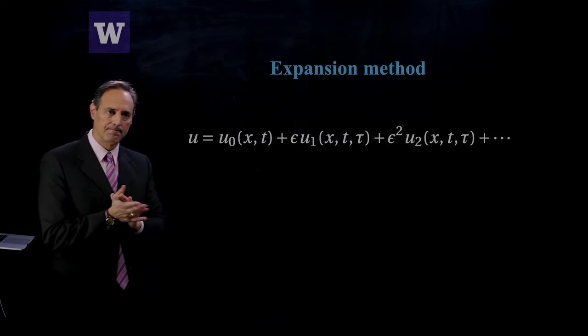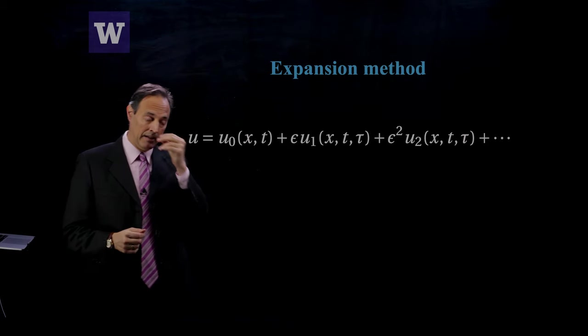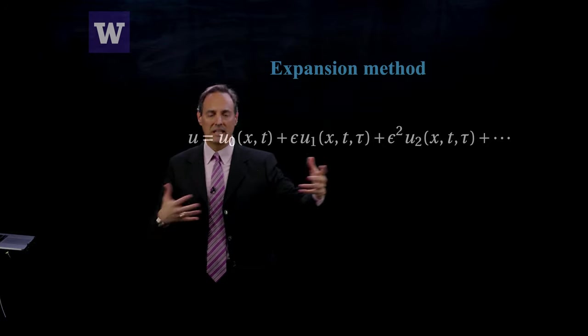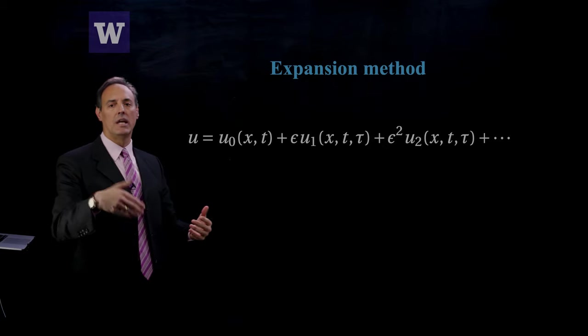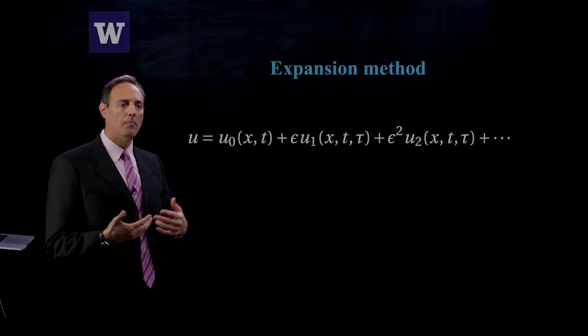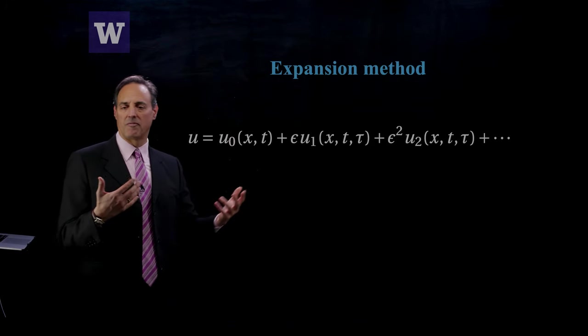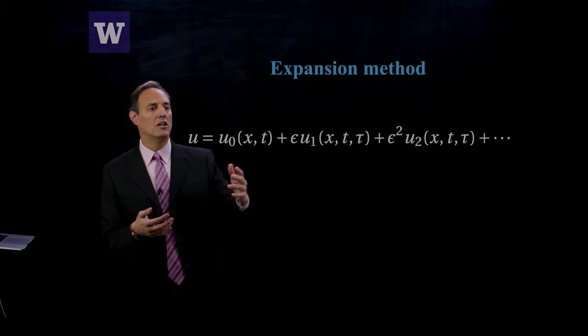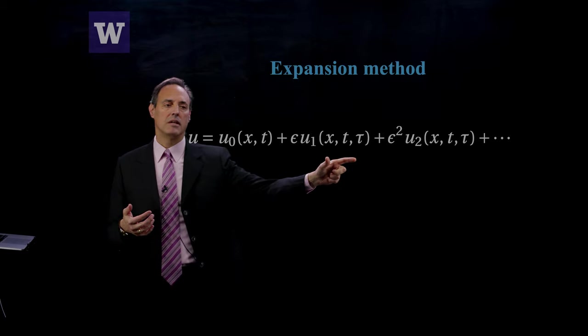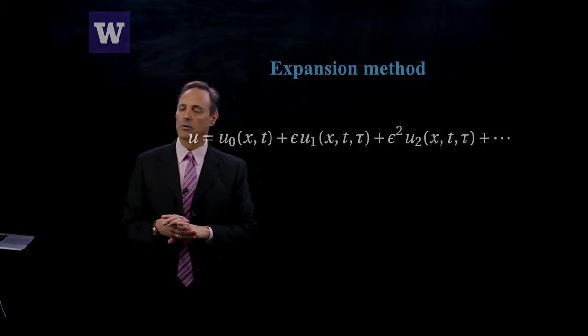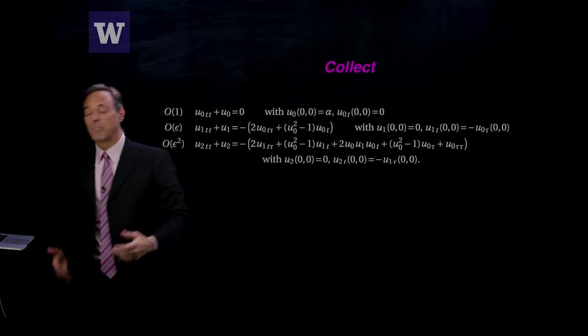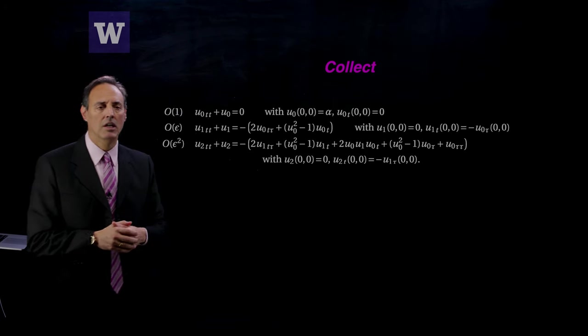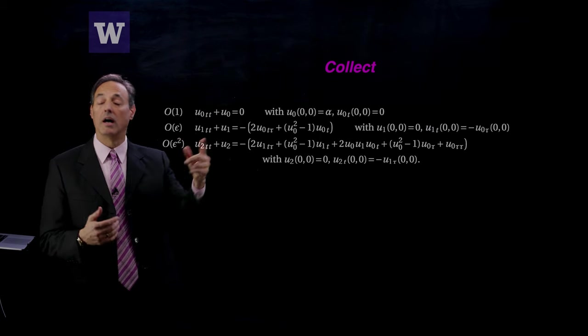We're going to do an expansion. Here's how the expansion is going to look: u0(x,t) plus epsilon u1(x,t,tau). That's the generic representation. Obviously here in the van der Pol, we're only dealing with the time problem. But more broadly, when you do multiple scales, if you had a function that was space and time, a spatial temporal system, you would simply broaden your dependency both on t and tau, especially in the higher order terms.